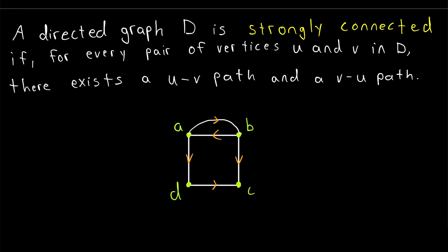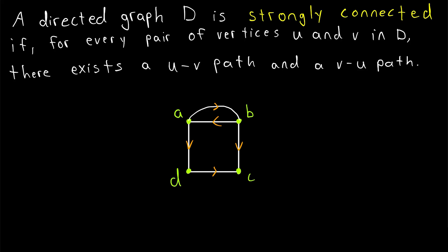A directed graph D is strongly connected if, for every pair of vertices U and V in D, there exists a path connecting those vertices in both directions. So there exists a U-V path and a V-U path.